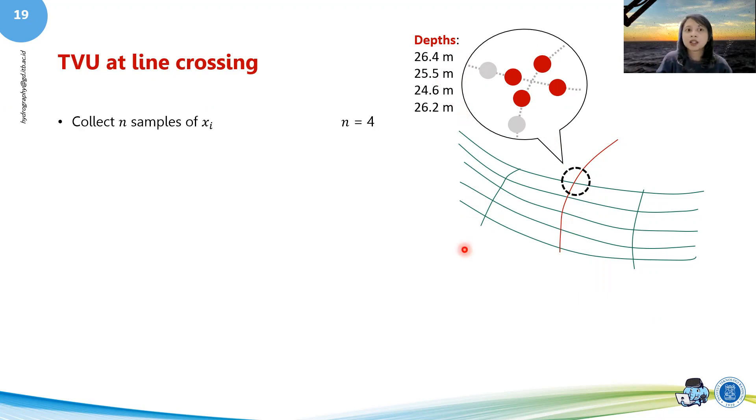For example, each of these depths are as written: 26.4, 25.5, 24.6, and 26.2 meters. We see how many samples we've got. We've got four samples, so n equals four. Then we calculate our standard deviation.